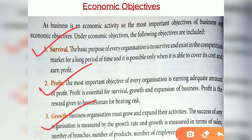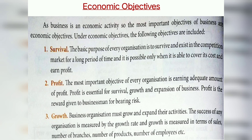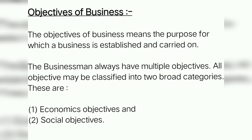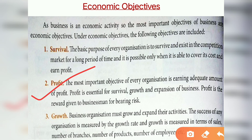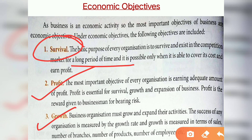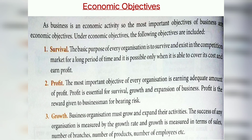So these were the three economic objectives of business: the first is survival, the next is profit, and then is growth. The business is established for earning. The main objective of business is to earn profit. If the business earns profit, it will definitely survive for a longer period of time, and if it is surviving, it will get the chance to grow. These terms are interrelated — these were the three economic objectives which a business has.